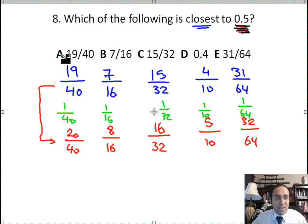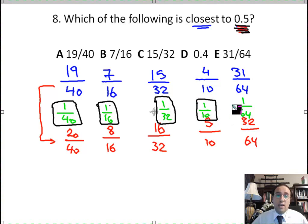So for answer A, the difference was 1 over 40. For answer B, the difference is 1 over 16. That's how close it is to half. In C, the difference is 1 over 32. In D, the difference is 1 over 10. And in E, the difference is 1 over 64.